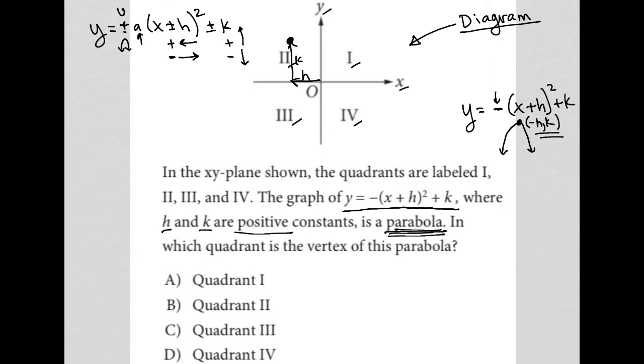So wherever that lands me, it will be in the second quadrant. It doesn't matter what h equals. It doesn't matter what k equals because any movement to the left h units and up k units will land me in quadrant two. And therefore, the answer is choice B.